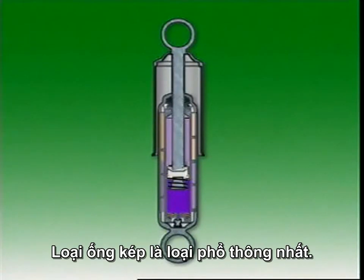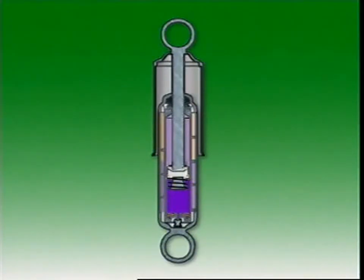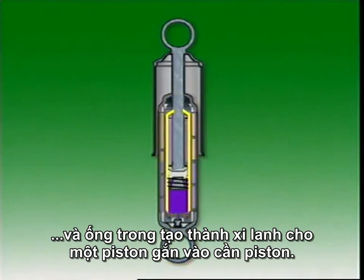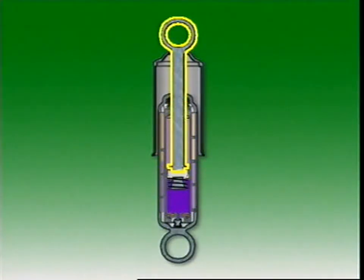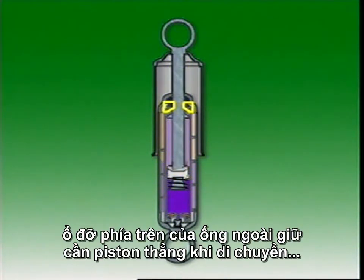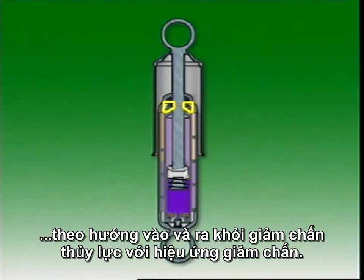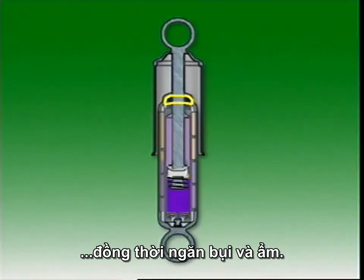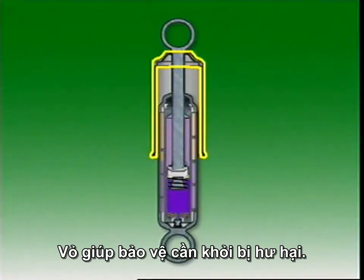The twin tube type is the most common. The outer tube is normally attached to the suspension member at its base, and the inner tube provides a working cylinder for a piston which is attached to a piston rod. The piston rod is connected to the frame at its outer end, and a bearing at the top of the outer tube keeps the rod in alignment as it moves in and out of the shock absorber. A seal above the bearing prevents oil leakage and keeps out dirt and moisture, and a shroud protects the rod from damage.